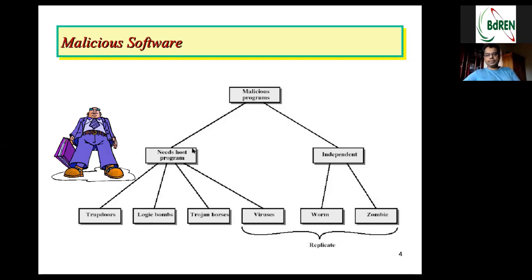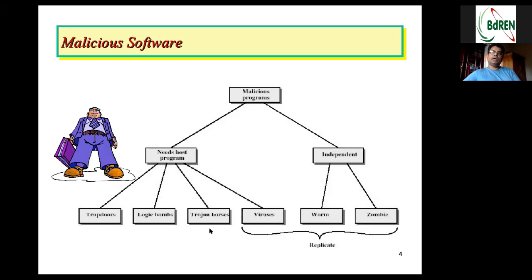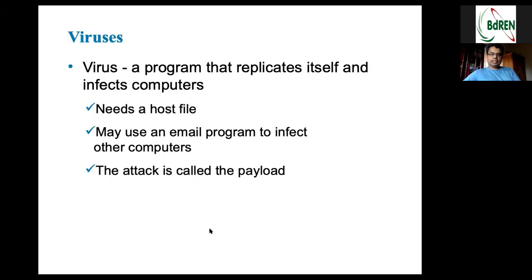So trapdoors, logic bombs, Trojan horses, and viruses are four categories that need a host program to live in. There are two other types of malicious software — worms and zombies — that spread over cyberspace independently; they don't need any host program and can spread from one infected machine to another with similar vulnerabilities. Among worms and zombies, zombies are the most dangerous and most popular malicious software nowadays. Viruses, worms, and zombies can all auto-replicate, while trapdoors, logic bombs, and Trojans cannot.